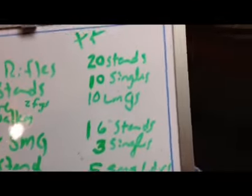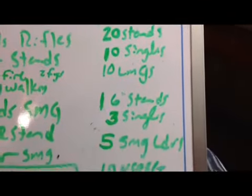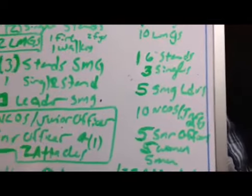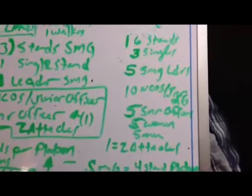So, anyway, you look at the total for the whole box. It'll be 20 stands, 10 singles, 10 light machine guns, 16 stands of submachine guns, three singles, five submachine gun leaders, 10 NCOs.